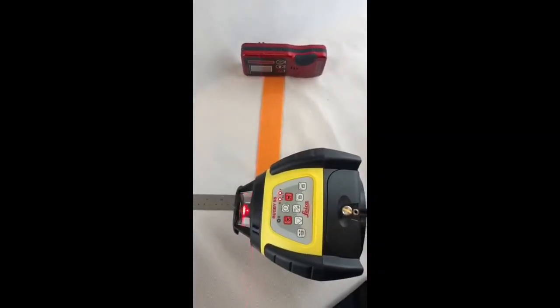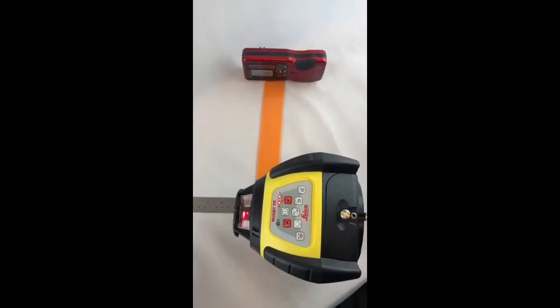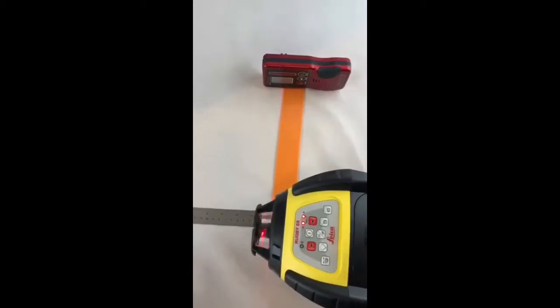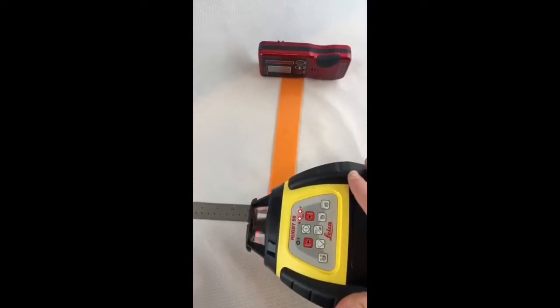Today I'm going to show you how to set out a square with the Leica Rugby 55 laser. We have the Leica over here, we have our reference point beneath, at the corner of our square.